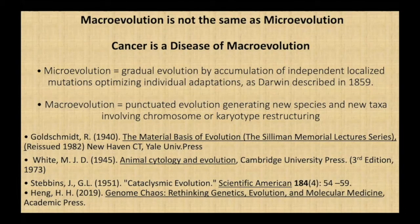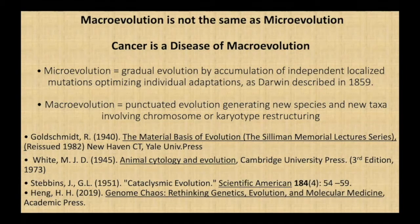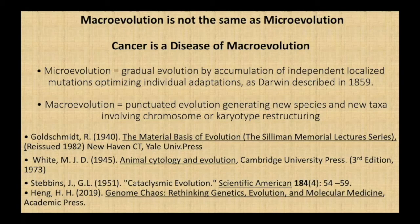First of all, we need to be clear about what we mean when we use the word evolution. Macroevolution is not the same as microevolution. Microevolution is the gradual evolution by accumulating independent localized mutations that optimize individual adaptations, as Darwin described it in 1859. Macroevolution, on the other hand, is punctuated evolution, generating new species and new taxa, and involves chromosome or karyotype restructuring.